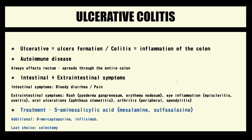Ulcerative colitis is a chronic inflammatory disorder of the large intestine. Ulcerative means ulcer formation; colitis means the disorder causes inflammation of the large intestine. Chronic means the inflammation is persistent — sometimes more severe, sometimes less — but the disorder lasts for a prolonged period of time.